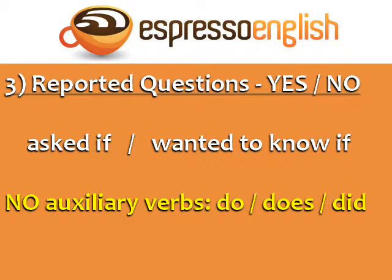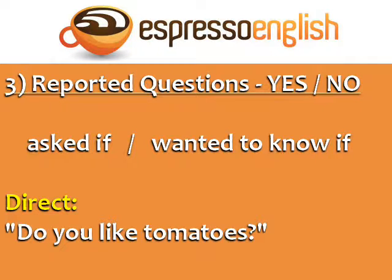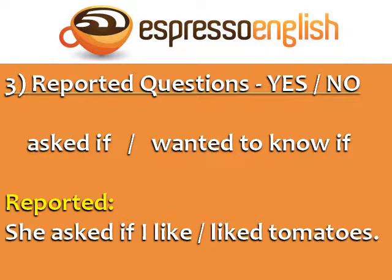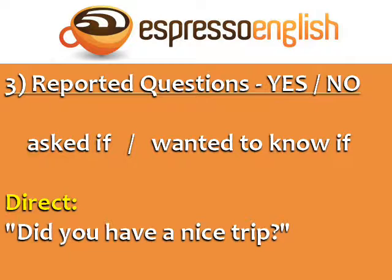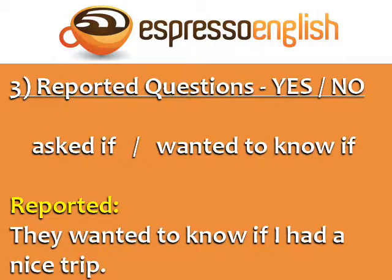In reported yes-or-no questions, we don't use the auxiliary verbs do, does, or did. For example — Direct: 'Do you like tomatoes?' Reported: 'She asked if I like tomatoes,' or 'She asked if I liked tomatoes.' Direct: 'Did you have a nice trip?' In the reported question, we don't use the auxiliary verb did: 'They wanted to know if I had a nice trip.'